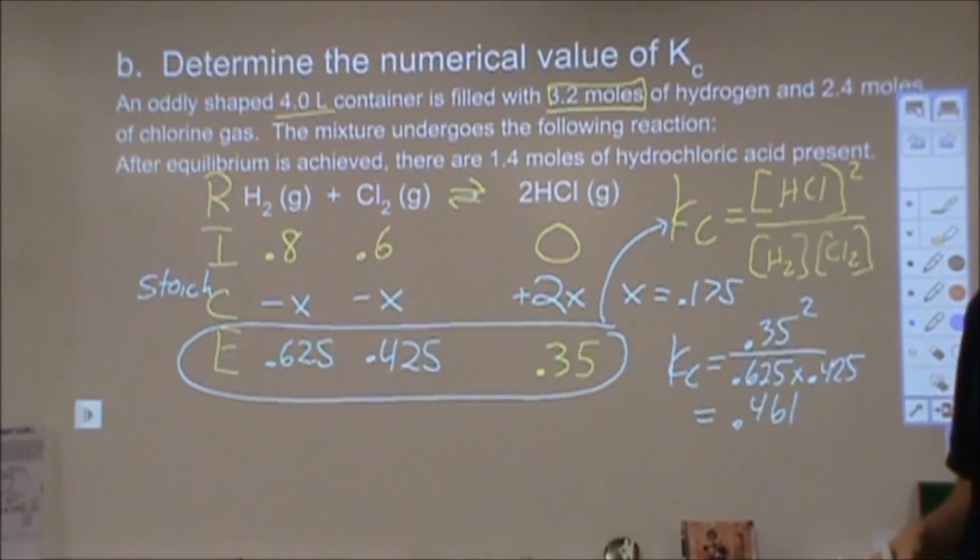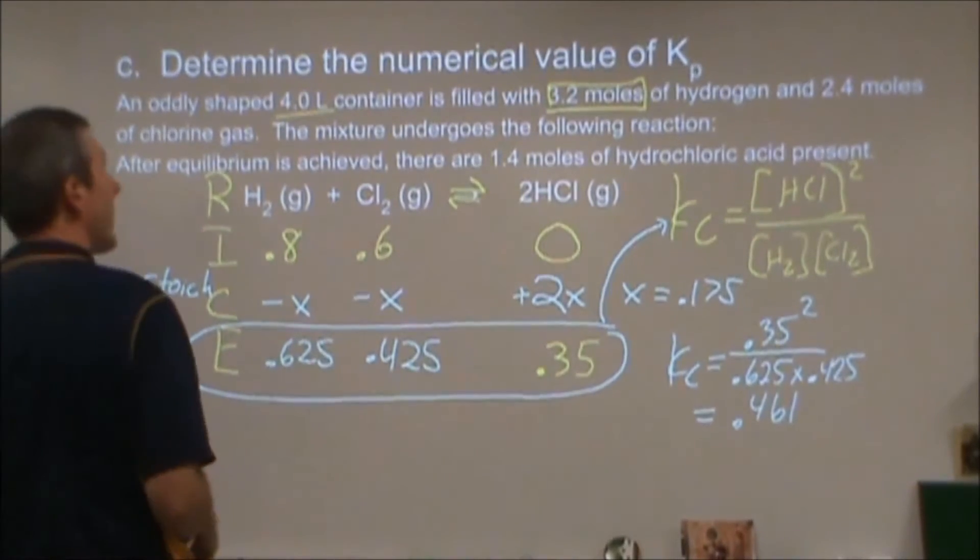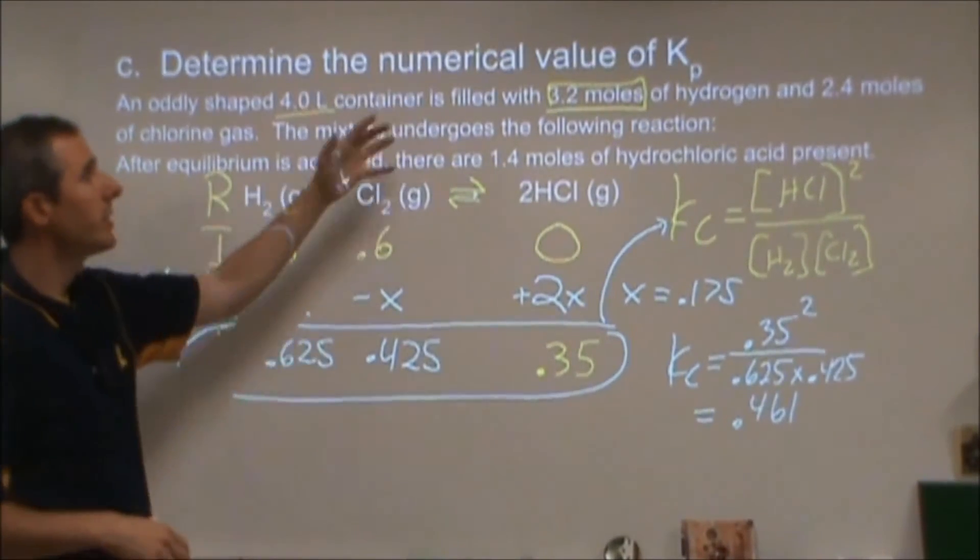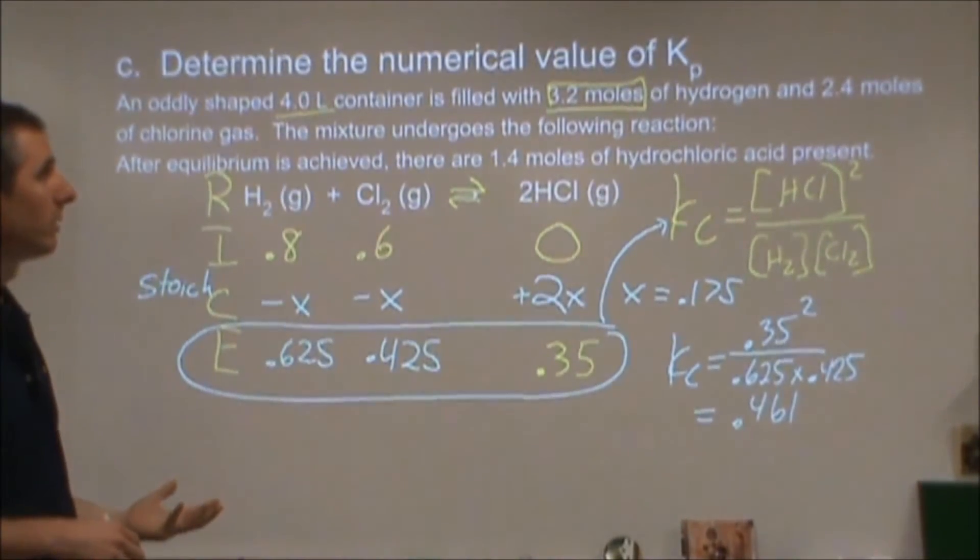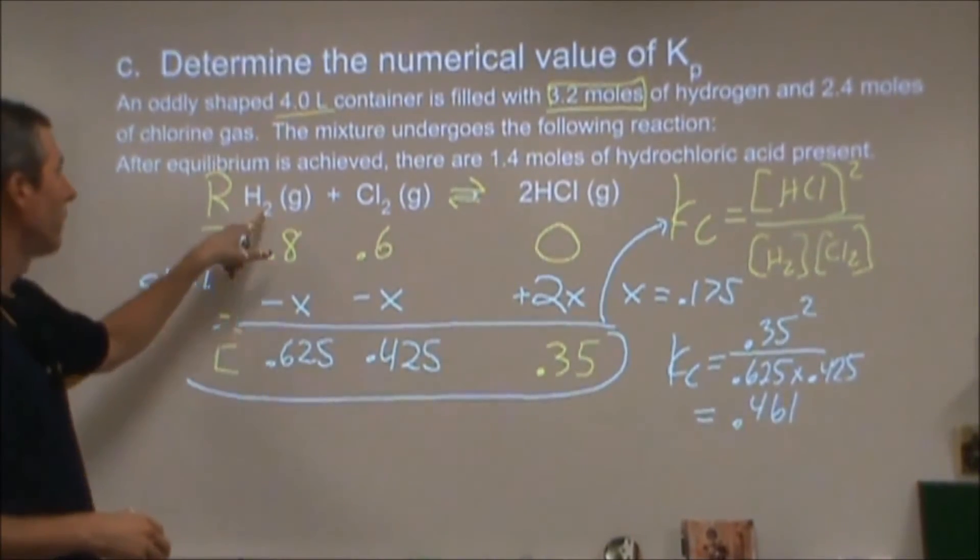So in the next part, in part c, same question, set up. But for part c, it says, what's the value of Kp? So I have Kc in concentration, the equilibrium constant. For pressure,